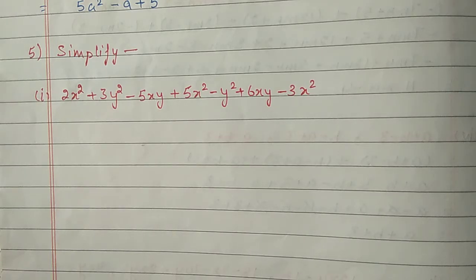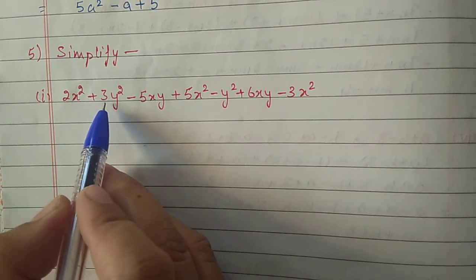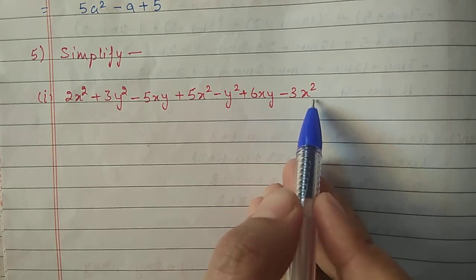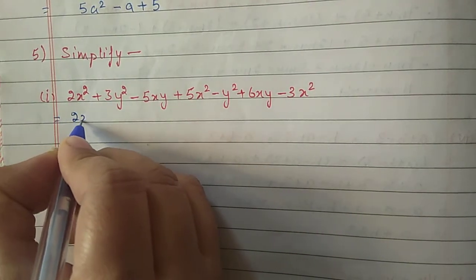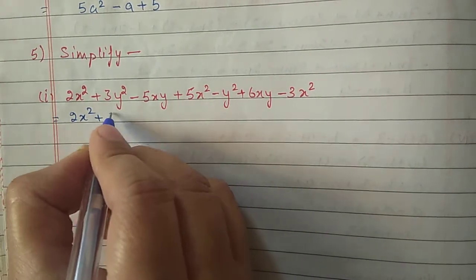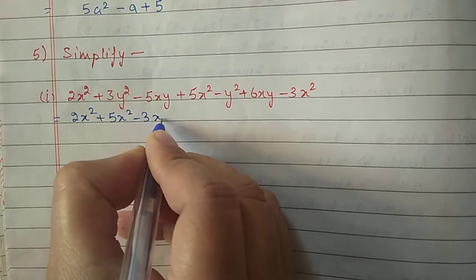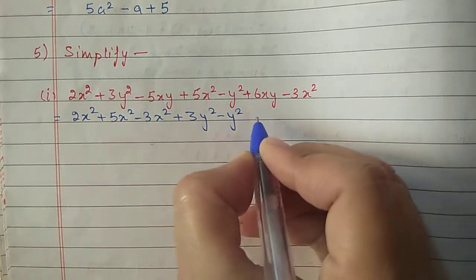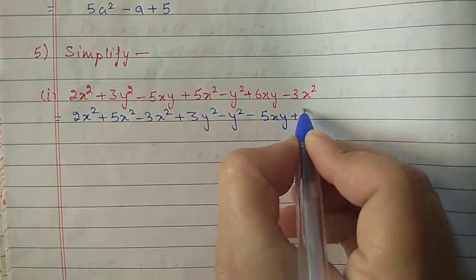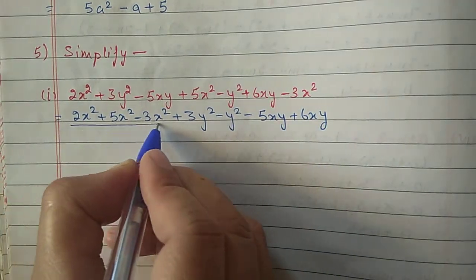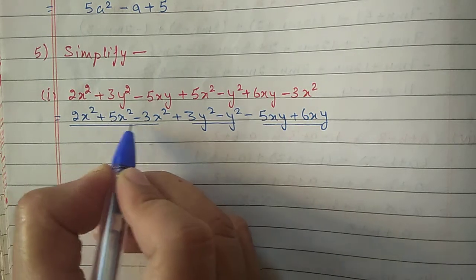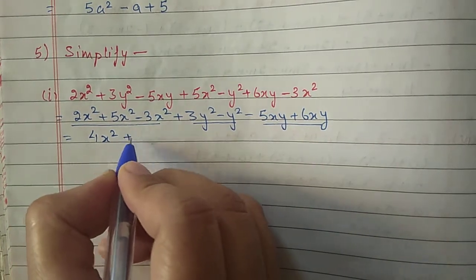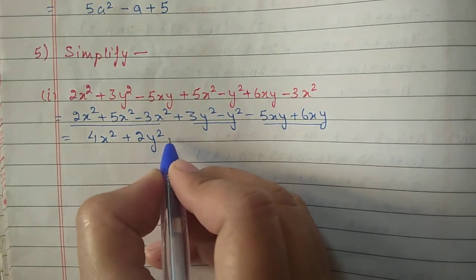Next, question number 5: simplify. First part: 2x square plus 3y square minus 5xy plus 5x square minus y square plus 6xy minus 3x square. Taking like terms together: 2x square, 5x square, and minus 3x square; 3y square minus y square; minus 5xy plus 6xy. Simplifying: 2 plus 5 minus 3 gives 4x square; 3 minus 1 gives 2y square; minus 5 plus 6 gives plus 1xy. Answer: 4x square plus 2y square plus xy.